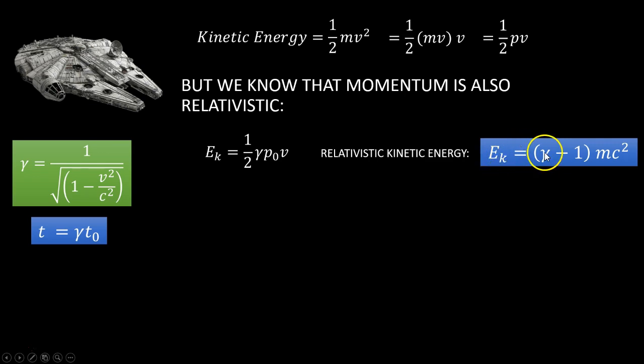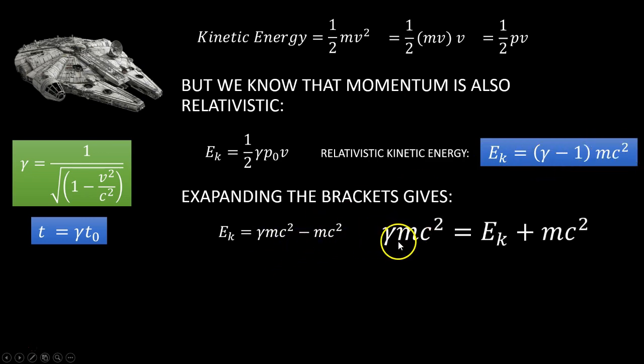And so here, the kinetic energy at relativistic speeds is related to this. Now, of course, at slow speeds, this boils down to very close to zero. So this only really applies at high gamma values. If you expand out these brackets, you would get gamma mc squared minus mc squared, which you could rearrange this form.